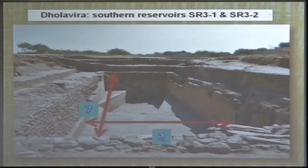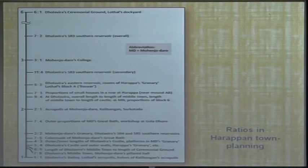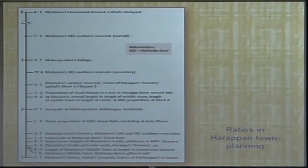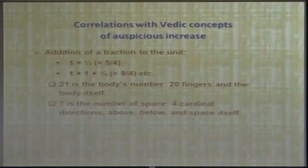If you plot all simple fractions systematically, you find that every one of them corresponds to a Harappan structure somewhere in one of the settlements. There is clearly an intention, and these people are trying to tell us something. Let us leave the Harappan world for a while and go to the Vedas and some late Vedic literature like the Brahmanas.